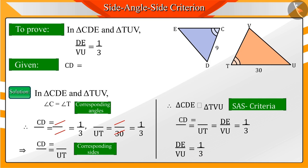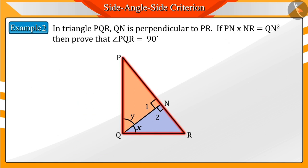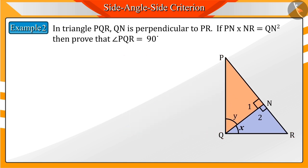Let's look at another example. In triangle PQR, QN is perpendicular to PR. If the product of PN and NR is equal to the square of QN, then prove that angle PQR equals 90 degrees.